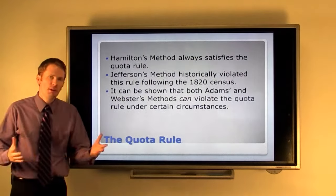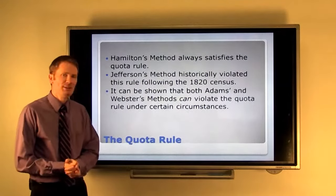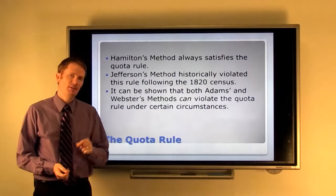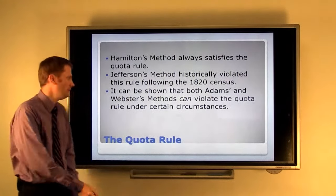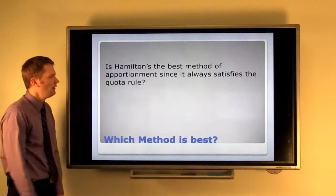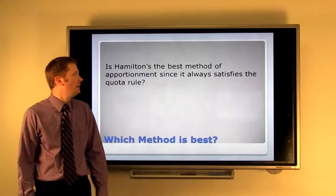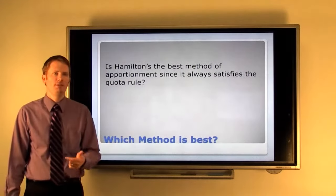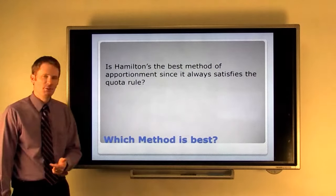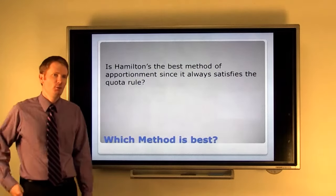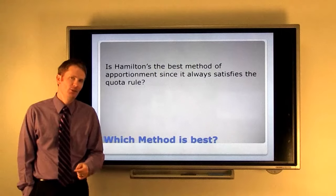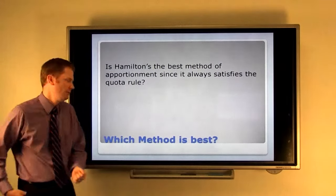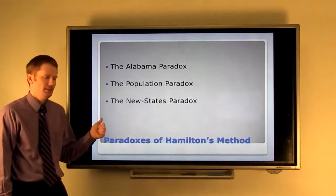It can be shown mathematically, not in this video, that both Adams and Webster's method can violate the quota rule under certain circumstances. So that brings us to this question. Is Hamilton's method the best method of apportionment? Because it always satisfies the quota rule. And the answer is maybe, depends on what you think about these.